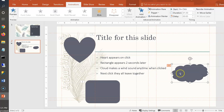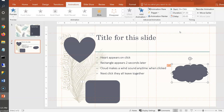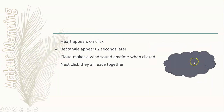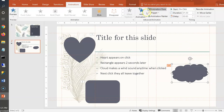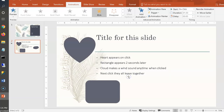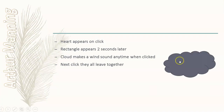Now add the sound. In the Animation Pane, right-click the cloud's animation and go to Effect Options. There you can specify a sound — choose Breeze. Now when you play the slide and click on the cloud, it blinks and plays a breeze sound. The trigger ensures this only fires when you click that specific object, not anywhere on the slide.